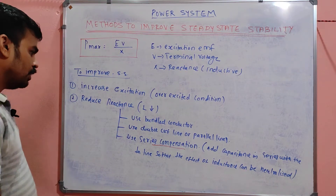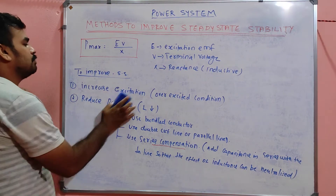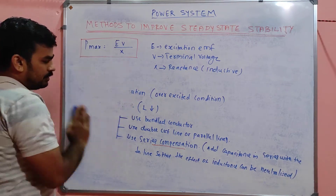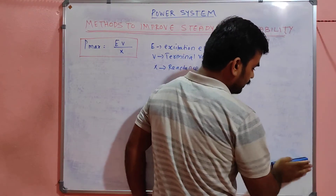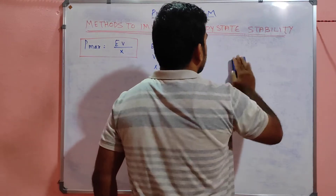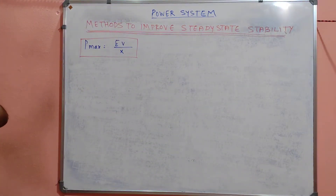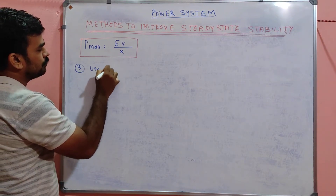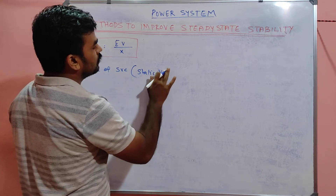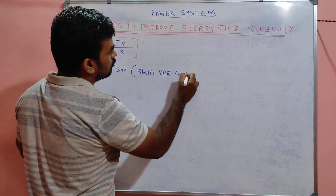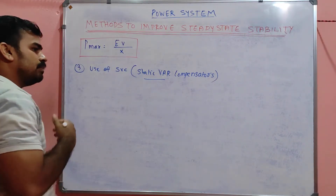These are three possible ways to improve steady state stability. One more very important modern method used in power systems is the use of SVC — Static VAR Compensators — to improve the power handling capacity, which we will discuss now.